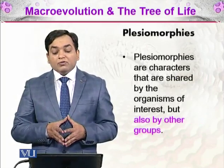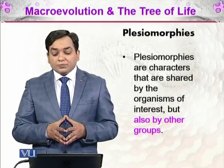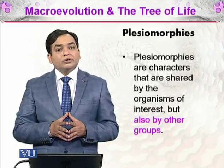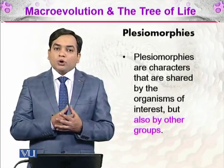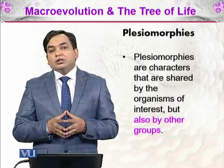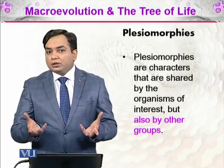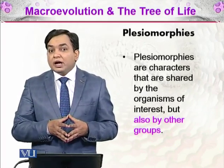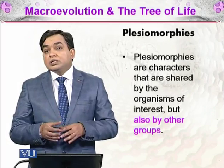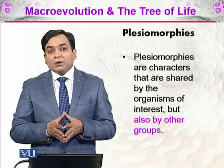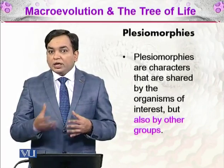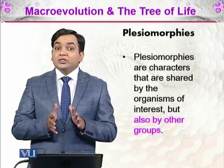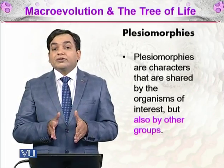The next type of uninformative characteristic is plesiomorphies. Plesiomorphies are characteristics shared by the organisms of interest but also by other groups. For example, wings are shared by all birds. If I want to identify parrots specifically, wings would not help because other birds also have wings. So having wings is an example of a plesiomorphy — it is not a characteristic of parrots only, but of birds in general.